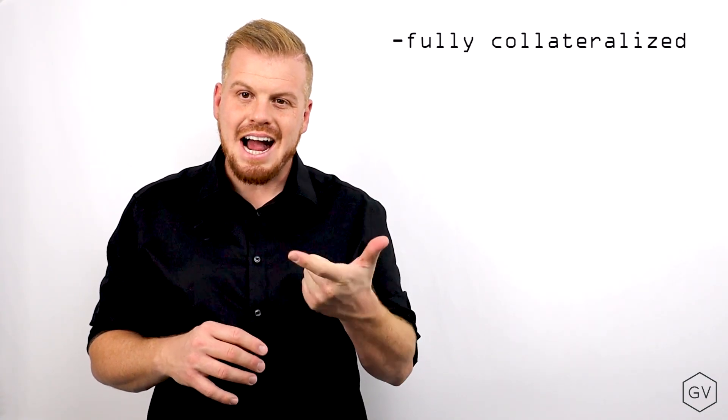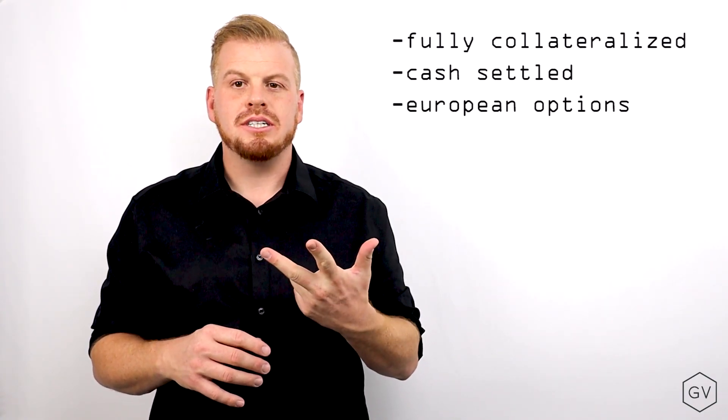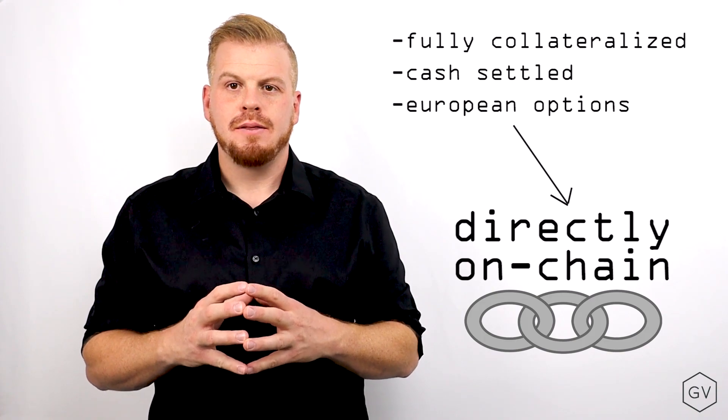SIREN allows traders to buy fully collateralized, cash-settled European options directly on-chain. The options themselves are cleared on-chain, and the funds are custodied on-chain.